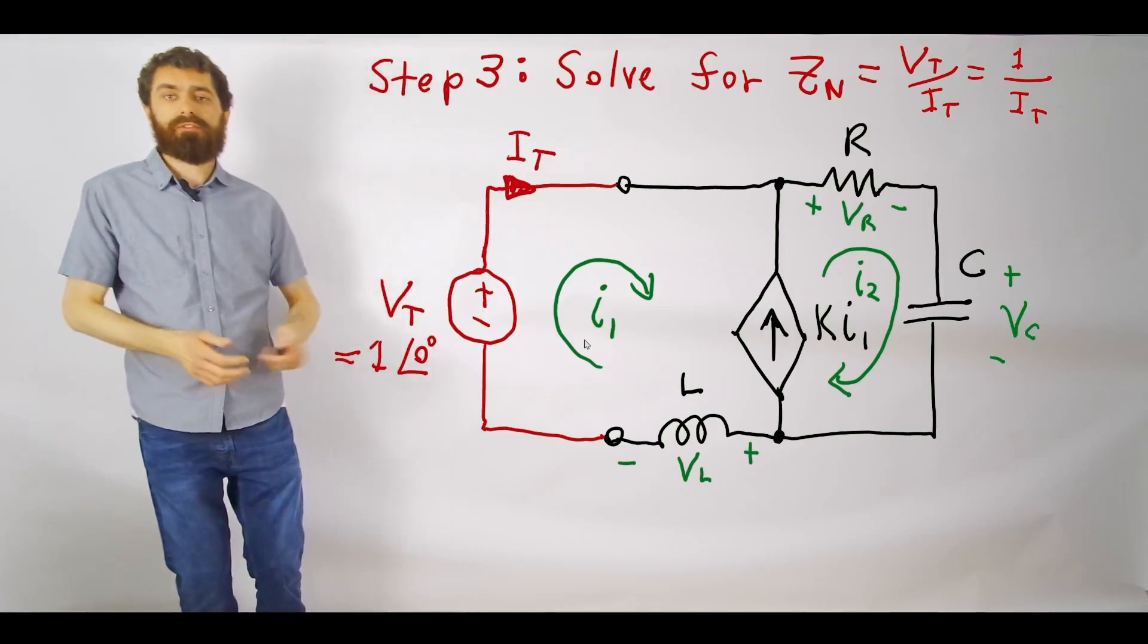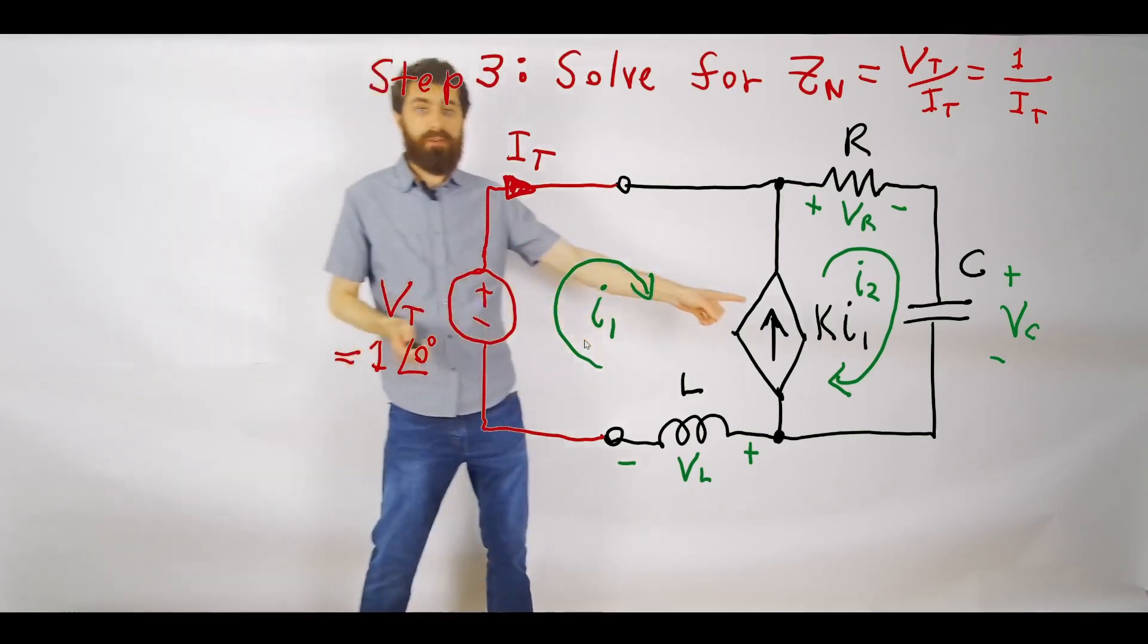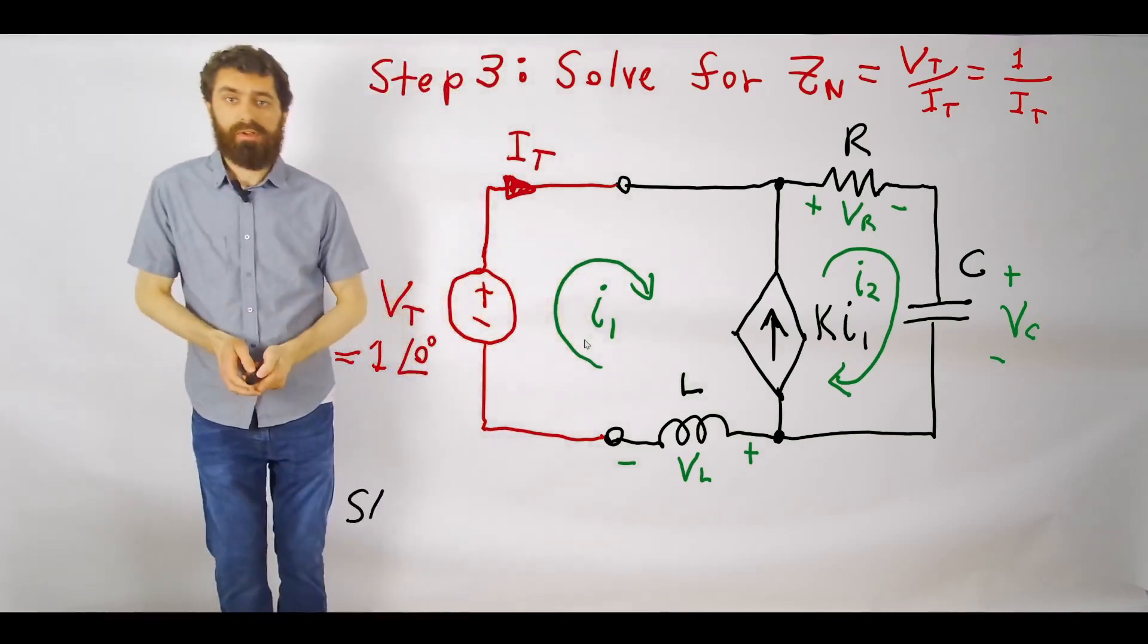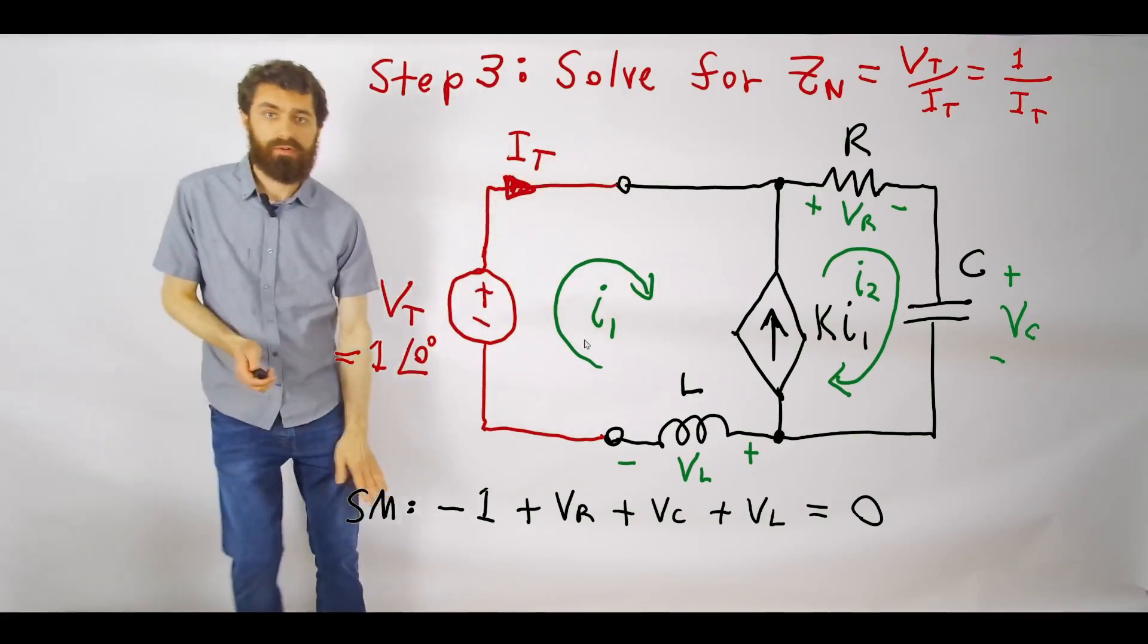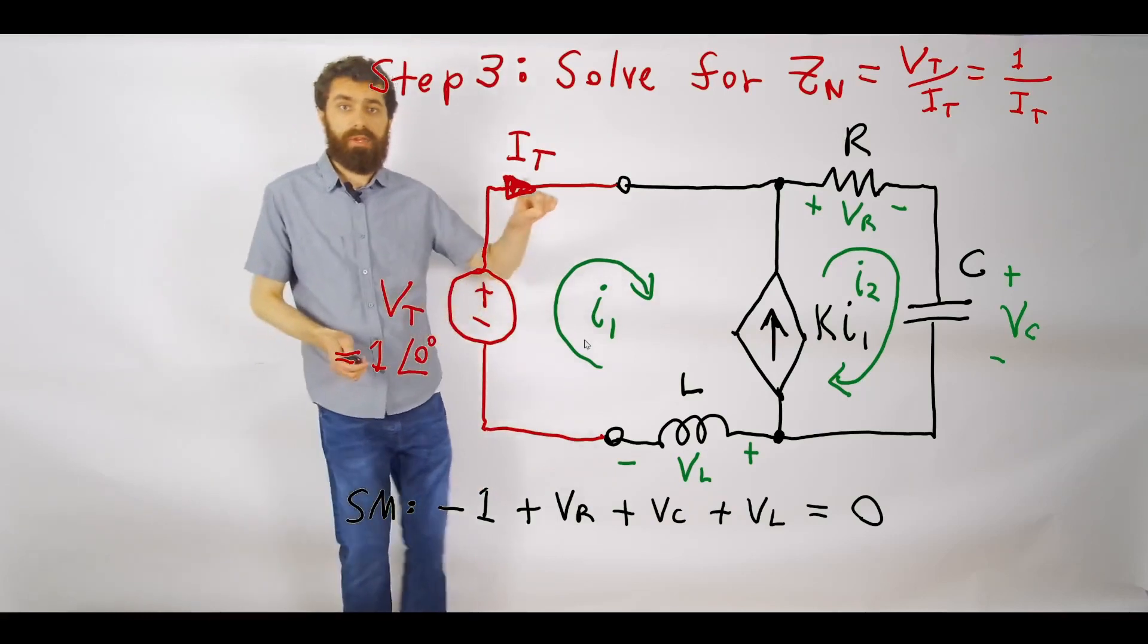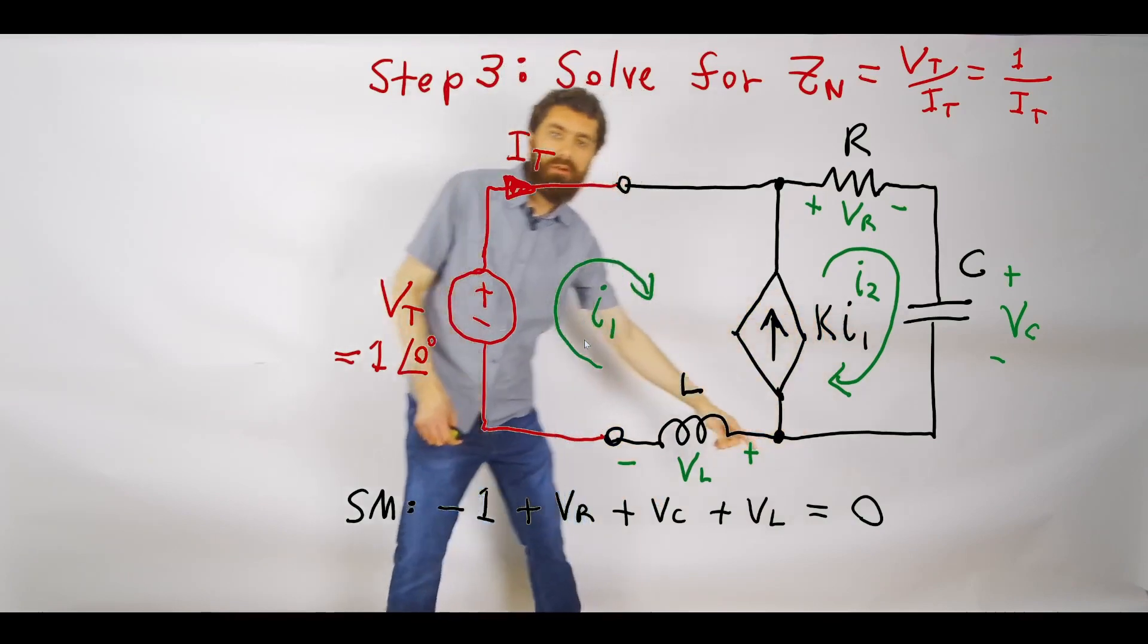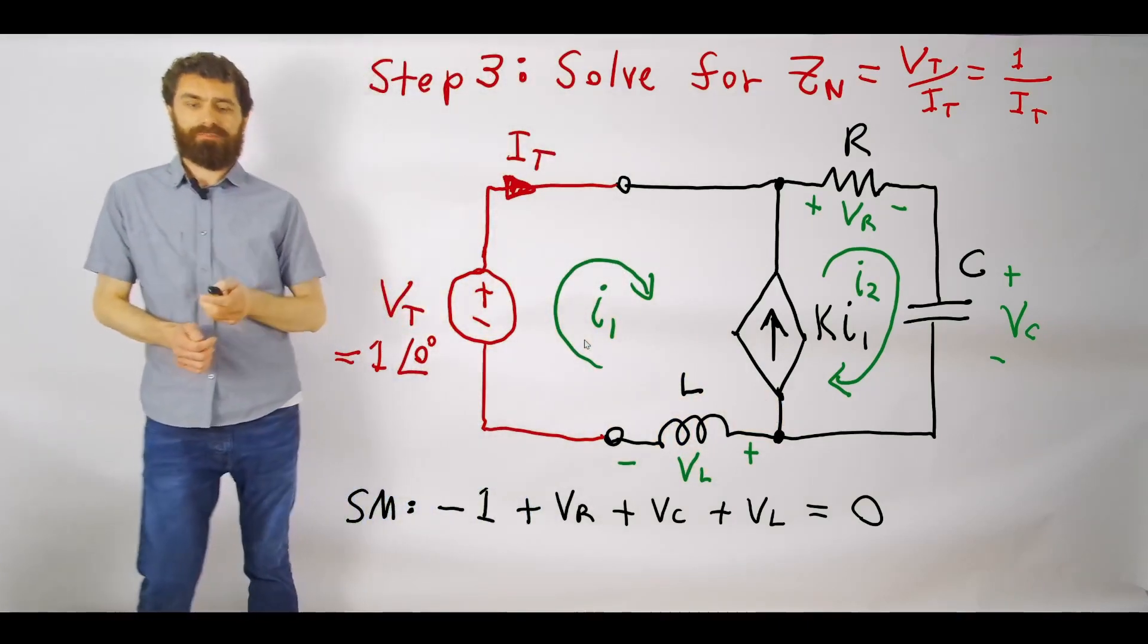Once we've done that, then we have to apply our KVL loops. In this case, you can see that we have a current source here, so we can't apply KVL here, but we can apply KVL to this super mesh going all around. We do the super mesh and collect all of our voltages in the loop. Let's walk through this equation here. Going in this direction, I hit a minus sign, so it's minus one volt. Then we go around and we hit plus VC, so we have plus VC. We continue to go around the loop and then we hit plus VL, plus VL, equal to zero. That's our KVL equation. Then the next step is we have to apply Ohm's law to express